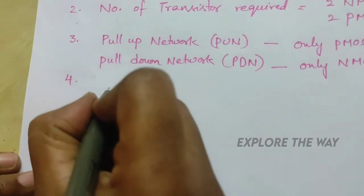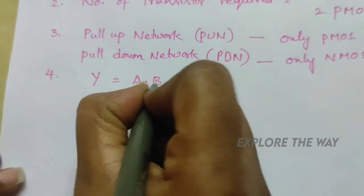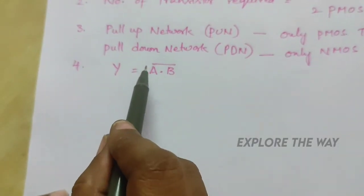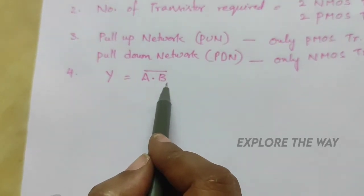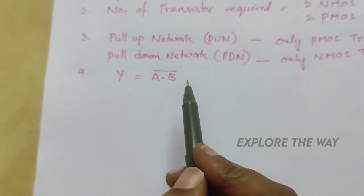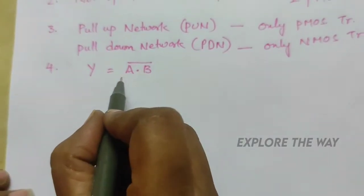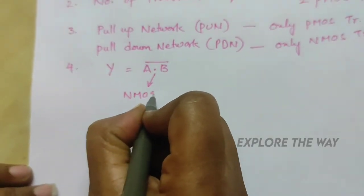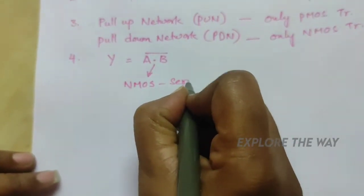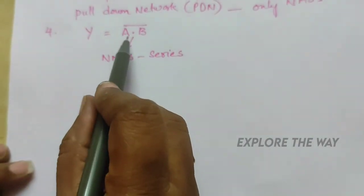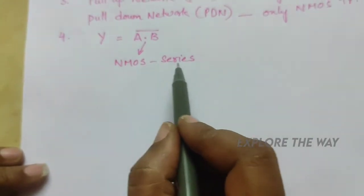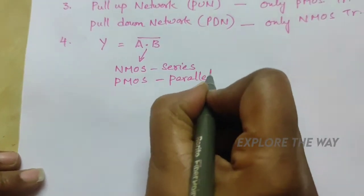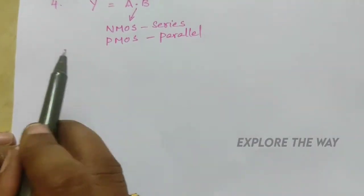The fourth step: the logic function is Y = (A·B)̄, which is in whole complemented form and has two input variables. It needs two NMOS transistors and two PMOS transistors. Those two NMOS transistors are connected in series because between the two variables there is a dot (AND) operation. Whenever we have a dot between variables, NMOS transistors must be connected in series and PMOS transistors must be connected in parallel. This is the logic to implement any logic function.